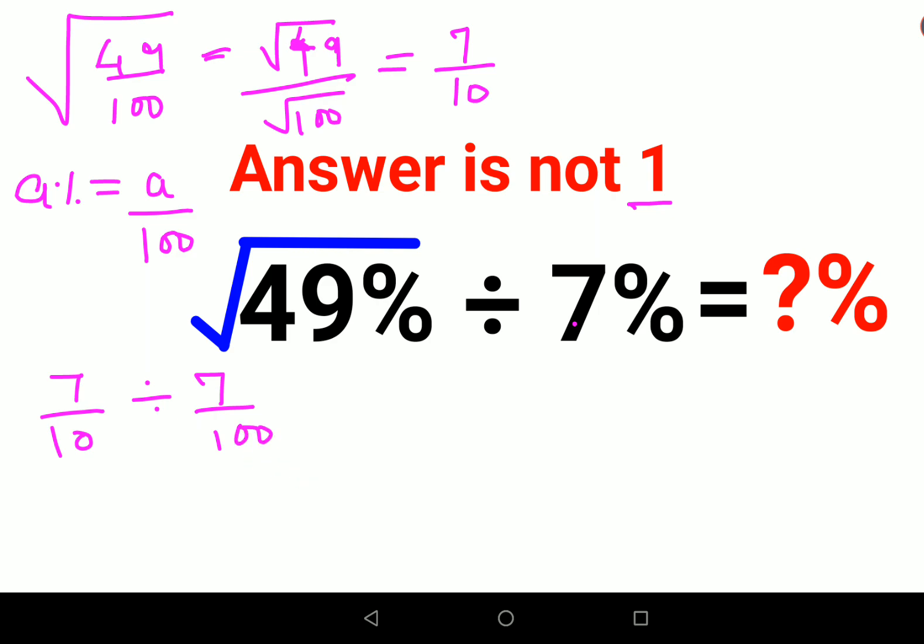Whenever you have a division sign between two numbers, we will follow the rule of K, C, F. Means keeping the first number as it is. So 7 upon 10 will be remaining as it is.